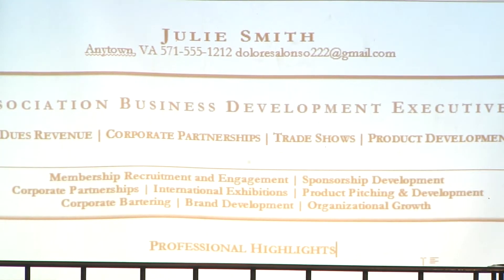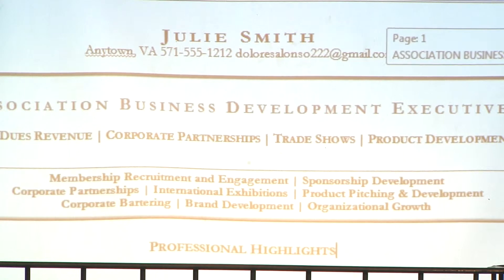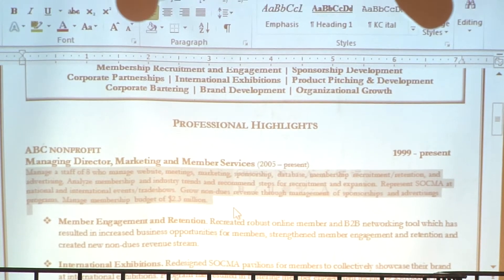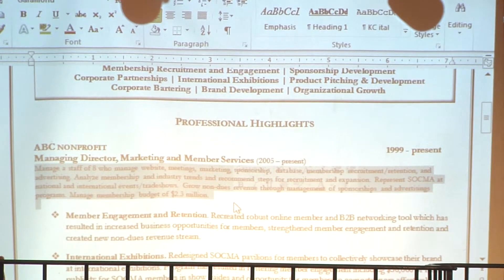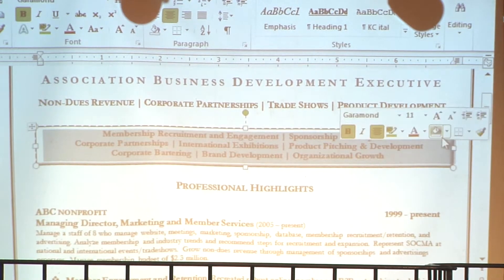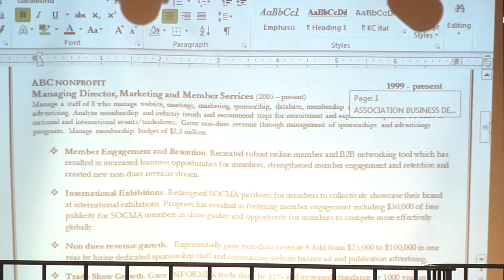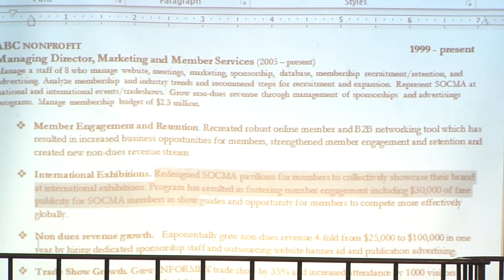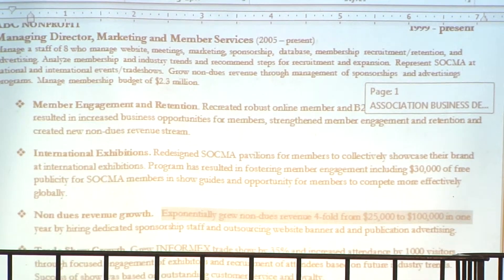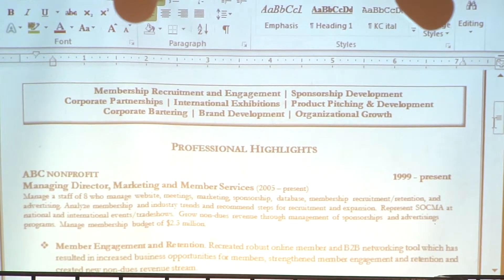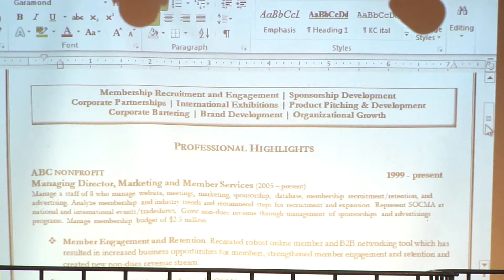This is the advertising piece of her resume. Then straight away I went into what I call professional highlights — you can call it professional experience, it doesn't really matter. Here's that little piece around the job description: manage a staff of eight, I represent this, I grew the budget to 2.3 million. But now notice — remember back up here we had all these competencies. Remember I talked about labeling your accomplishments? This is what it looks like. See how it's bolded: member engagement and retention — here's the example. International exhibitions — here's the example. Non-dues revenue growth — here's the example. When you scan down the page, or the recruiter scans down the page, it all pops. There are a lot of bullets here because she's been there since '99 — actually longer, but we split her job. She's been there a long time, so this really is the bulk of her resume. Normally you wouldn't have quite this many bullets.